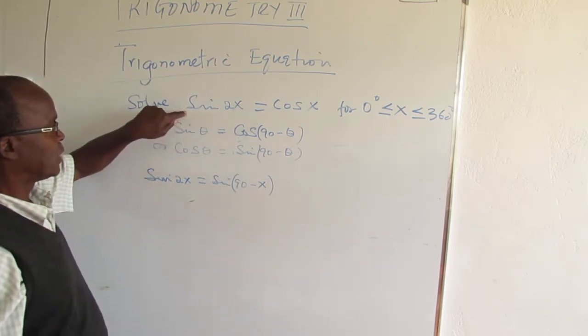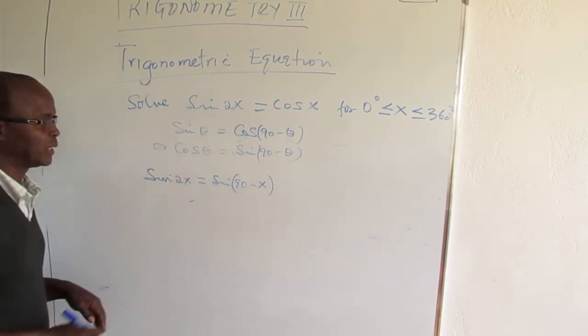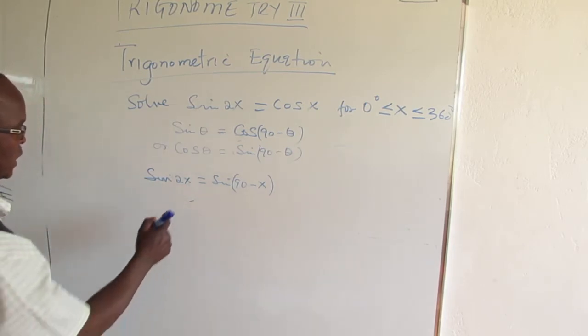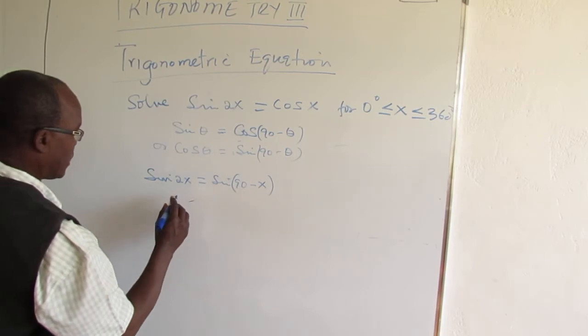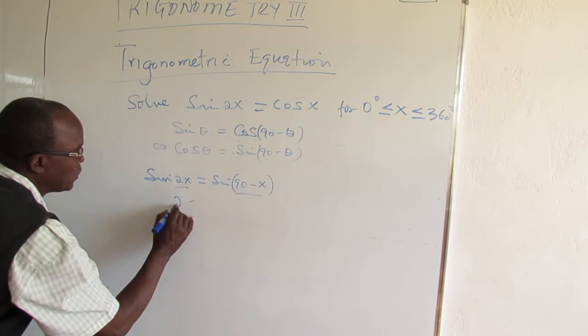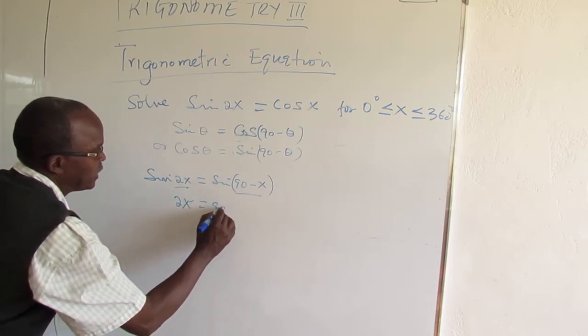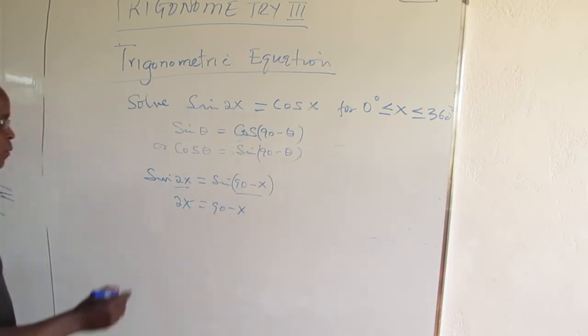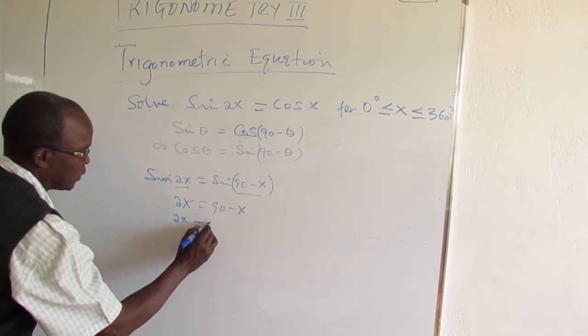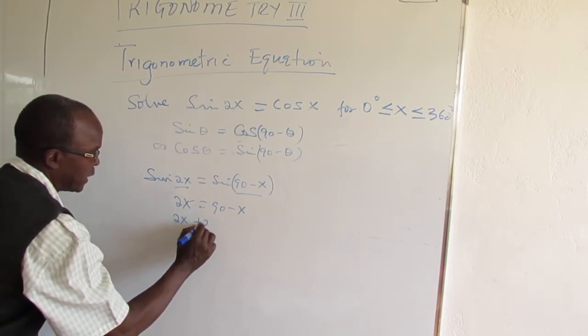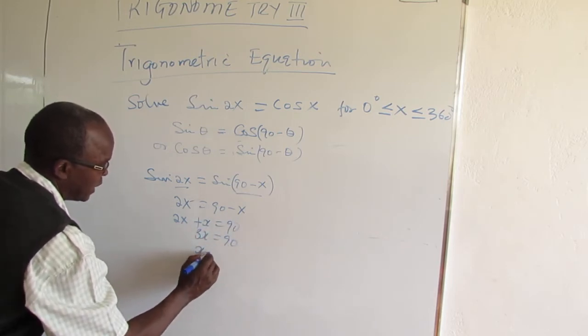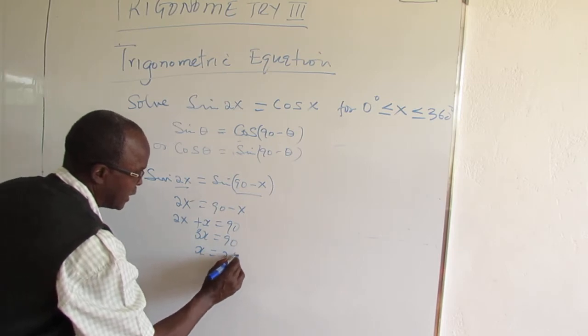So we have to rewrite the equation so that we can easily solve. When we solve that, we can now pick the values 2x equals 90 minus x. Put the right terms together, 2x plus x equals 90, 3x equals 90, x is 30 degrees.